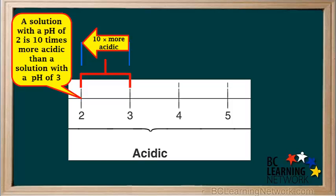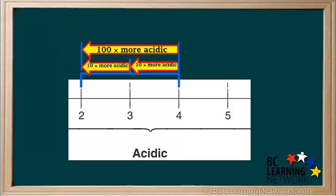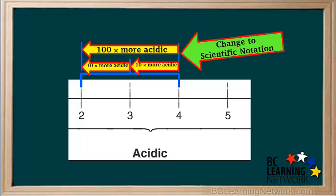Similarly, a solution with a pH of 2 is ten times more acidic than a solution with a pH of 3. So see if you can predict how many times more acidic a solution with a pH of 2 is than a solution with a pH of 4. We see that a solution with a pH of 2 is ten times ten, or a hundred times more acidic than a solution with a pH of 4. We can also look at this in terms of scientific notation. When a pH decreases by two units, the acidity increases by a factor of ten squared, or ten to the power of two.